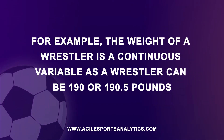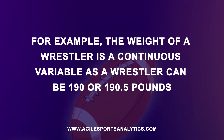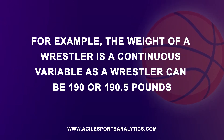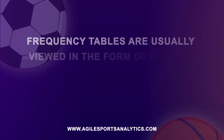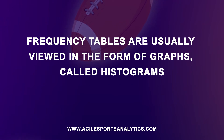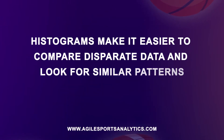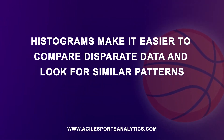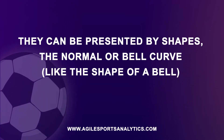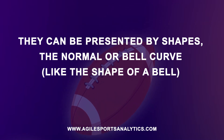For example, the weight of a wrestler is a continuous variable, as a wrestler can be 190 or 190.5 pounds. Frequency tables are usually viewed in the form of graphs called histograms. Histograms make it easier to compare disparate data and look for similar patterns. They can be presented by shapes such as the normal or bell curve, shaped like a bell.